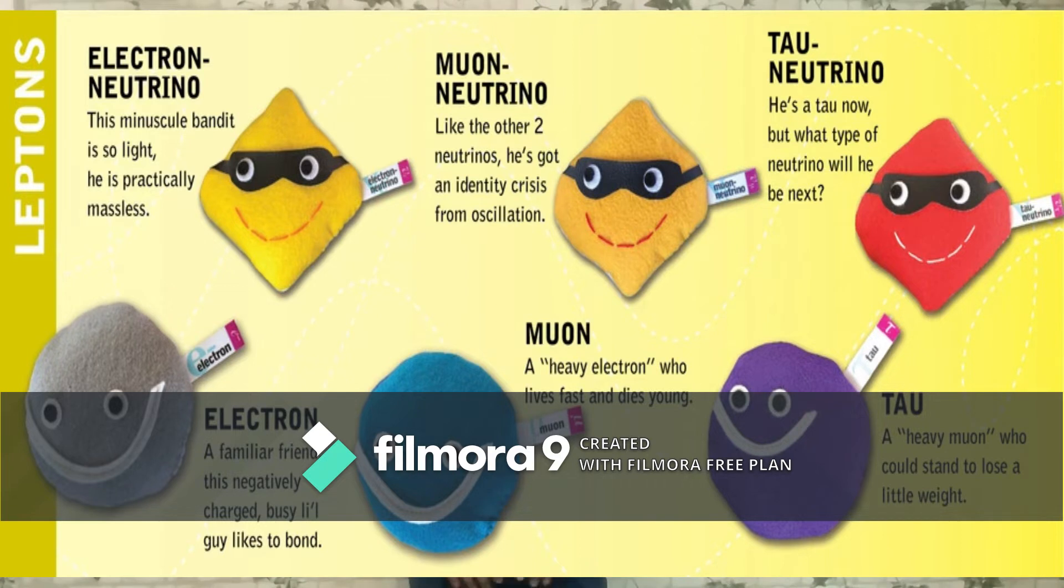And leptons? Leptons also have six types: muon, tau, electron, tau neutrino, muon neutrino, and electron neutrino.